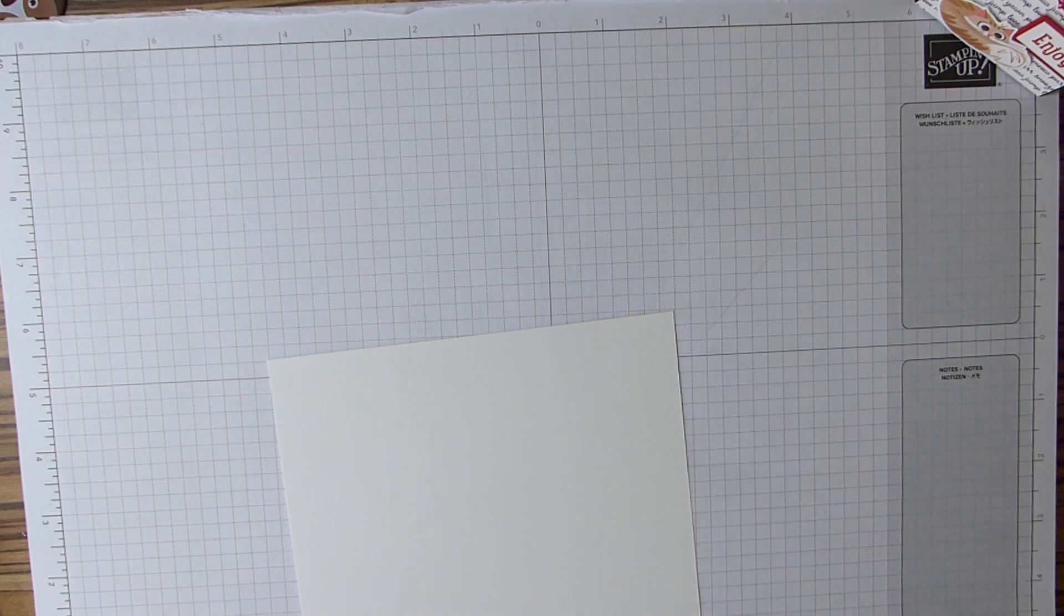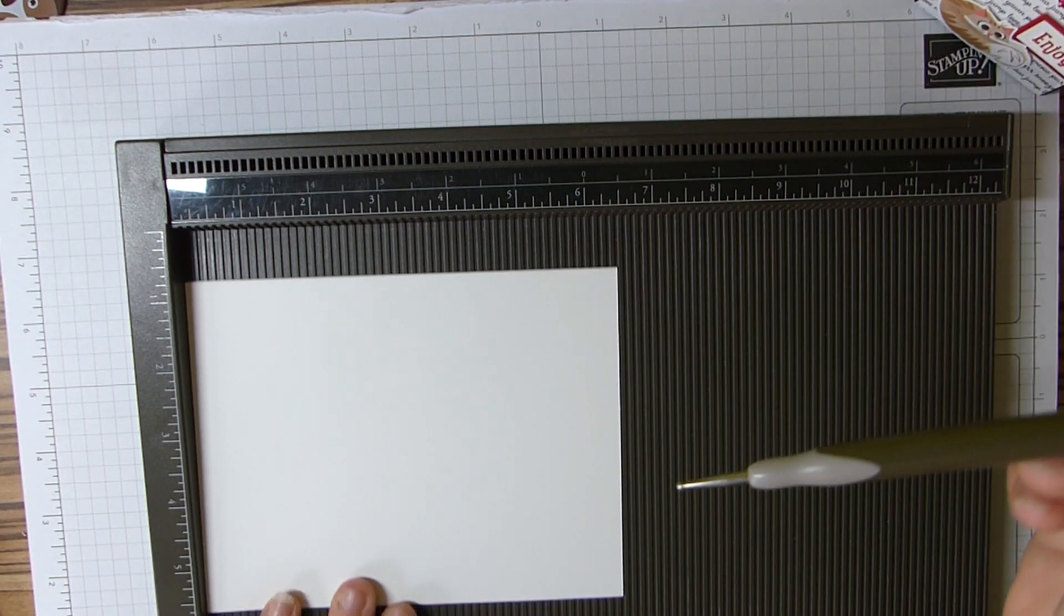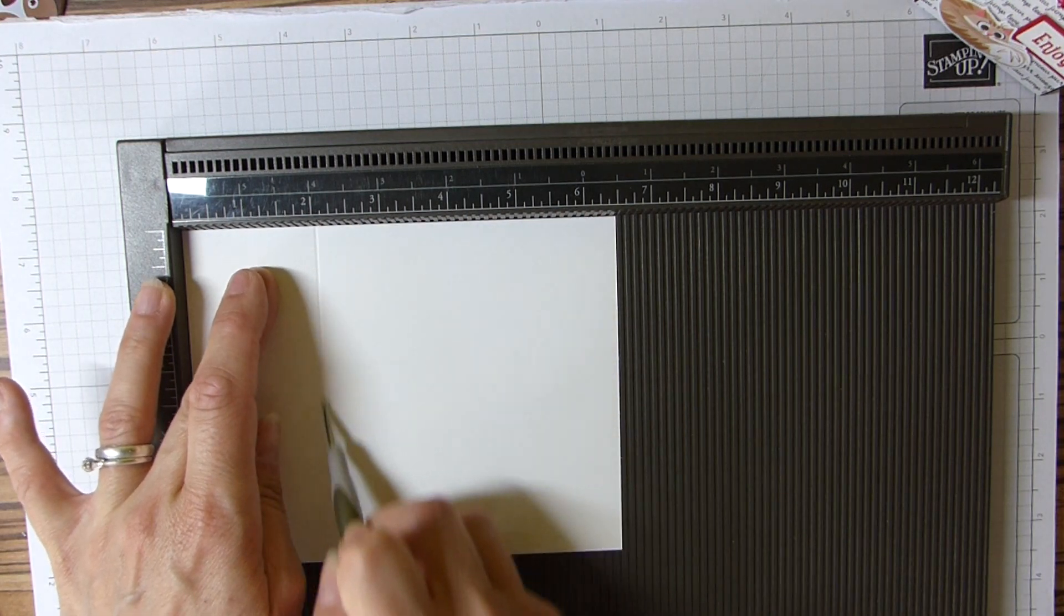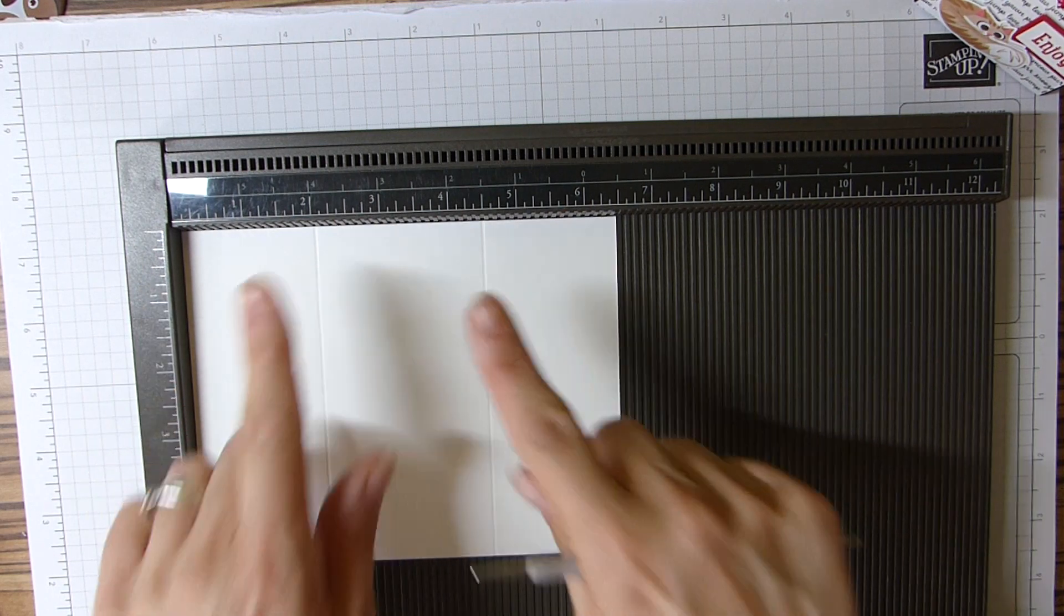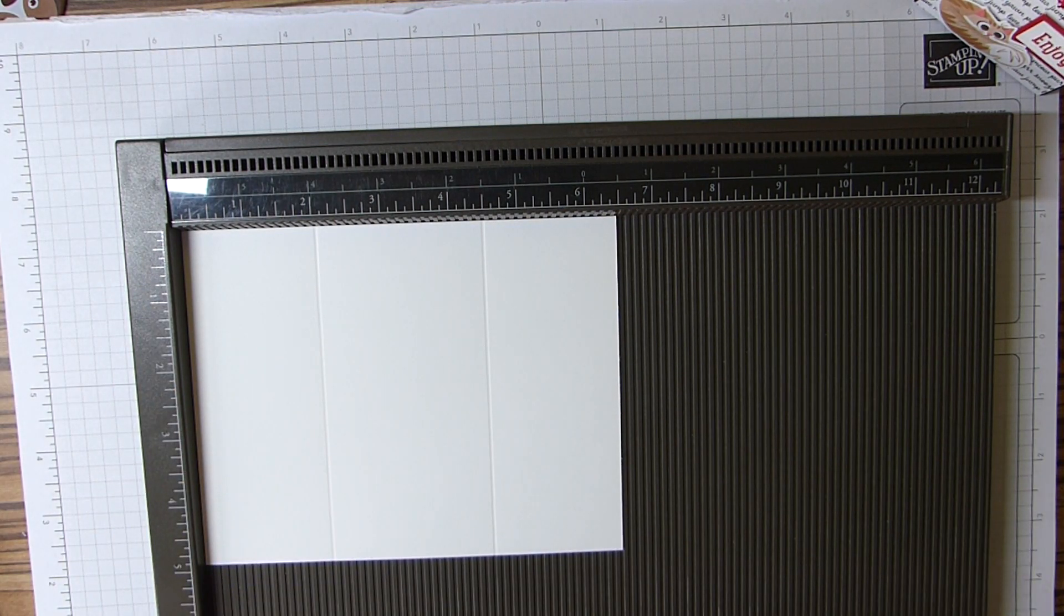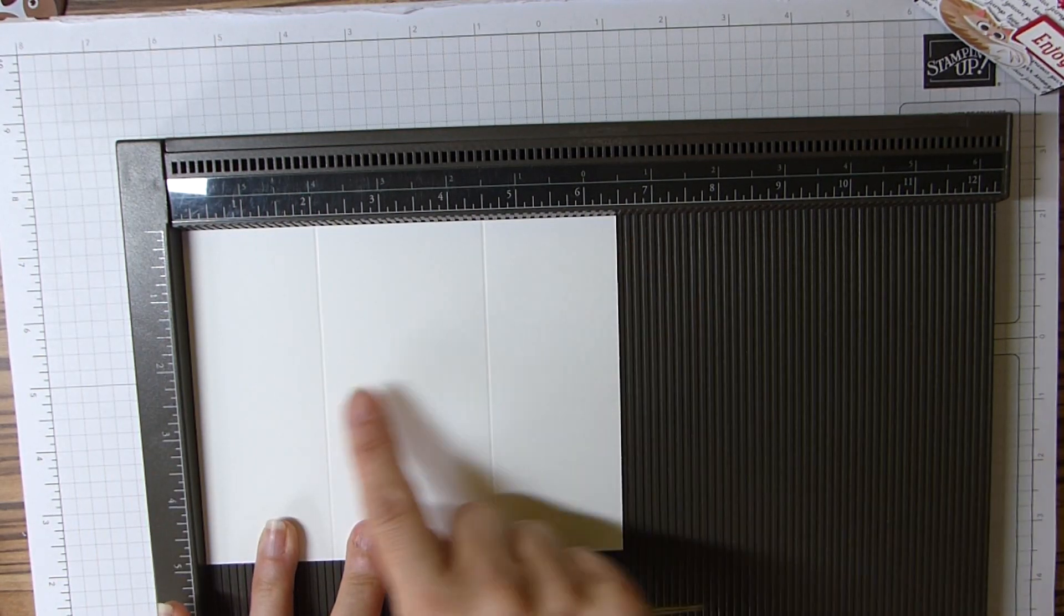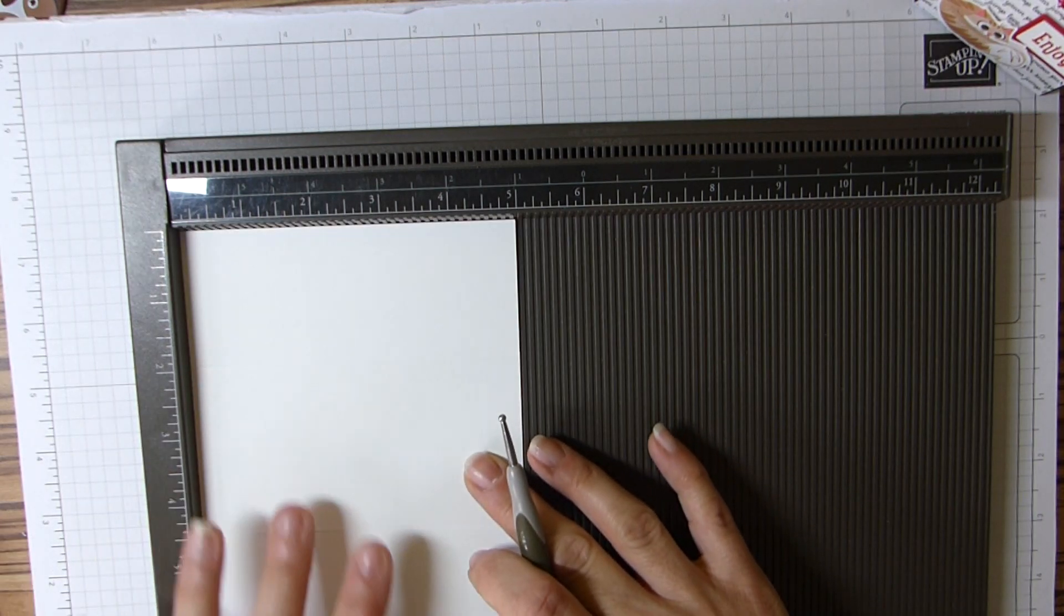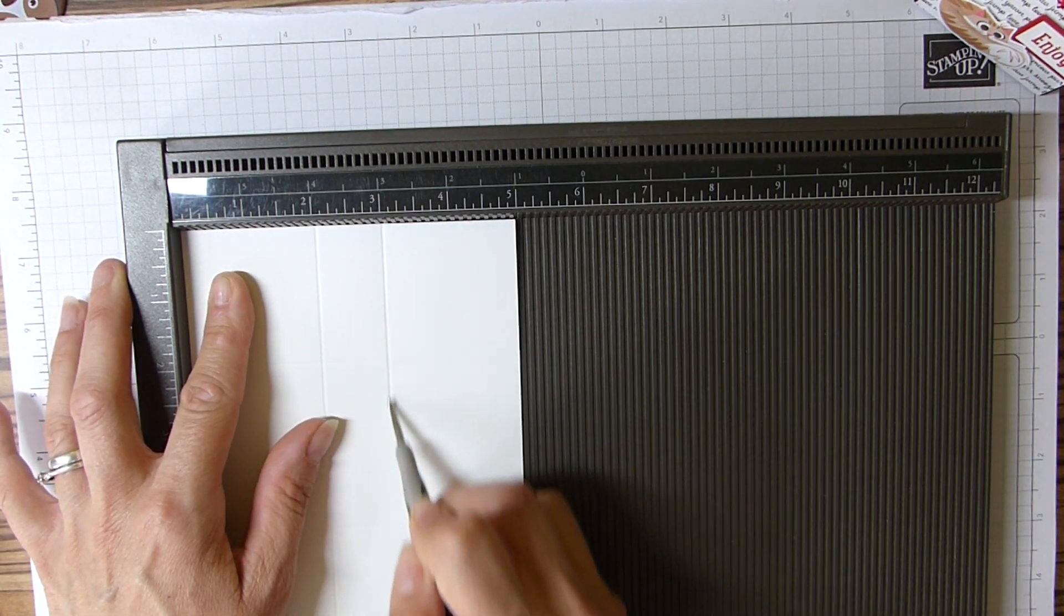To start off with, you will need a piece of cardstock that is six and a half by five. The cardstock itself is six and a half by five, which is sixteen and a half by twelve and a half centimeters. Then on the long side, we're going to score at two and four and a half, which is five and eleven and a half. And then on the short side, we're going to score at two and three, which is five and seven and a half centimeters.